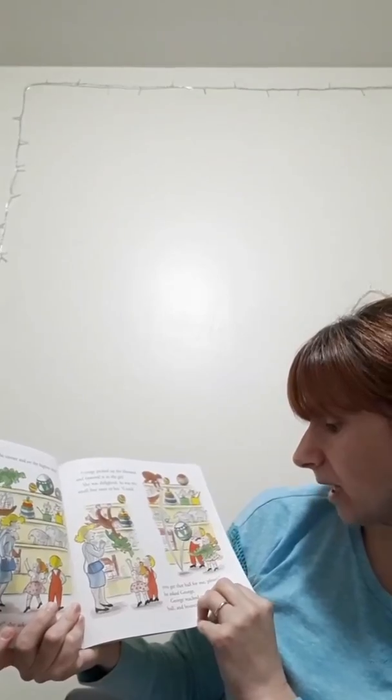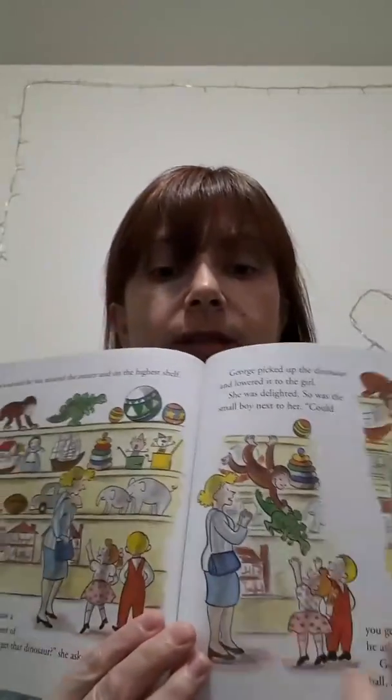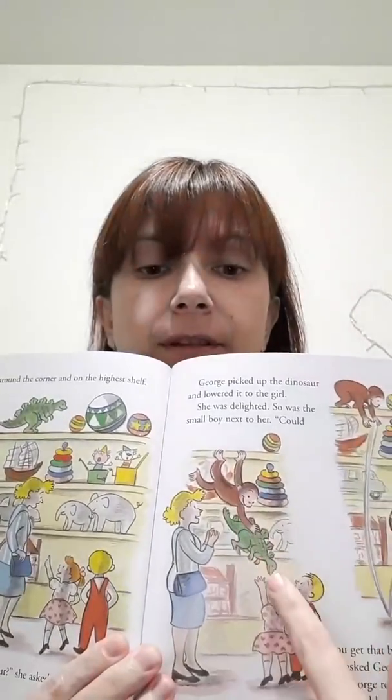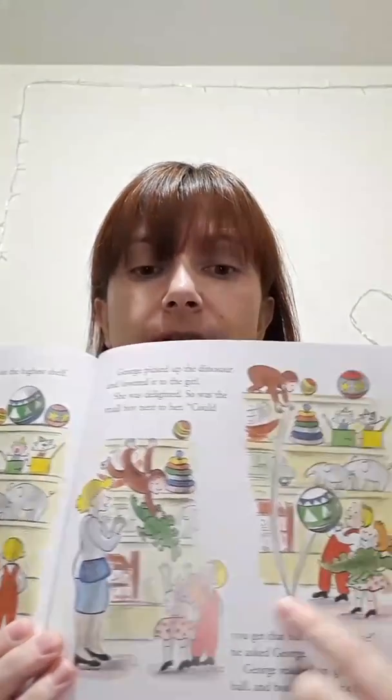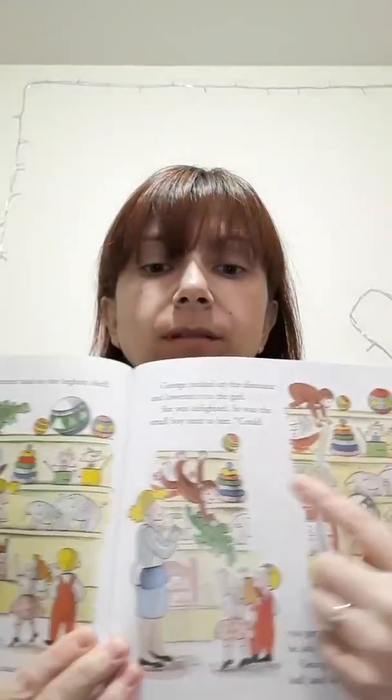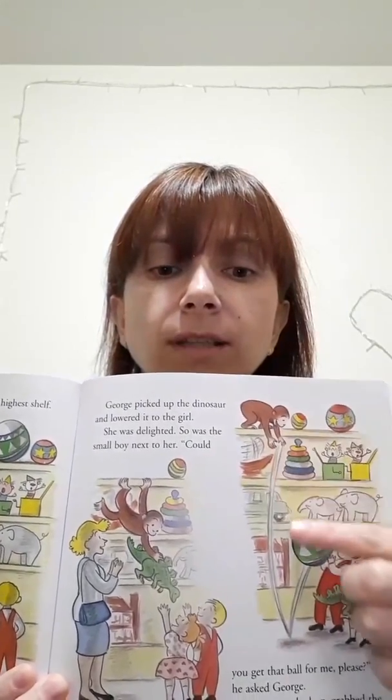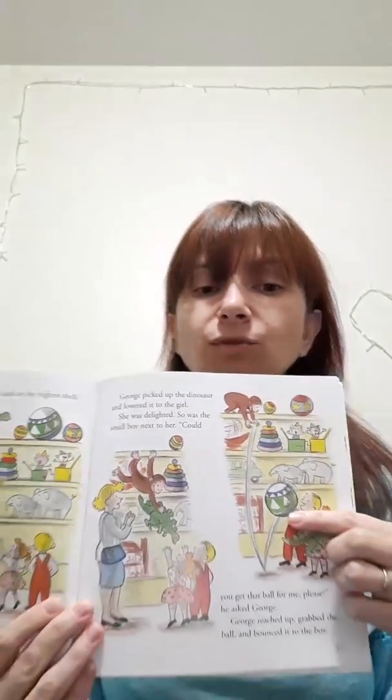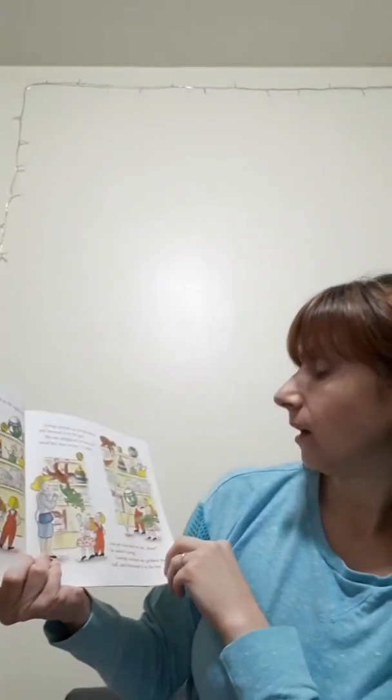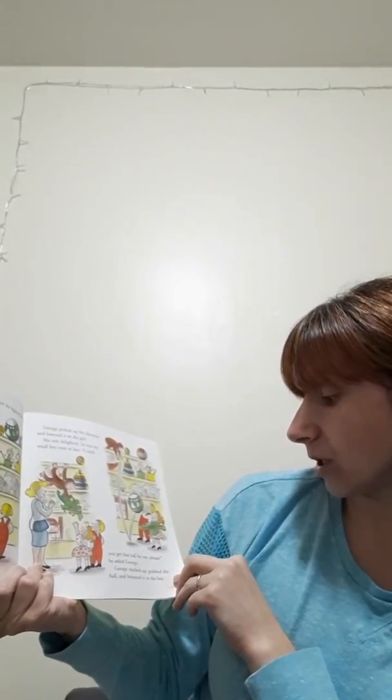Could you get that ball for me, please? He asked George. So, this is how George gave the dinosaur to the girl. And this boy wanted the ball from the highest shelf too. Look at this. Good job, George. George reached up, grabbed the ball and bounced it to the boy.